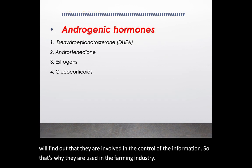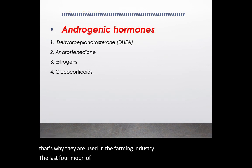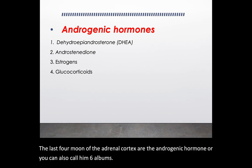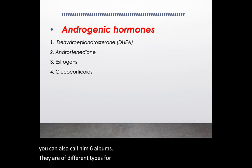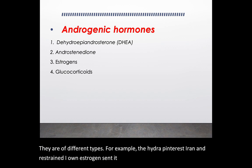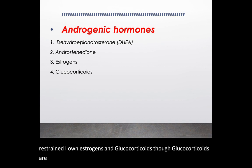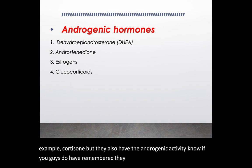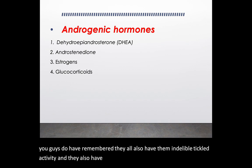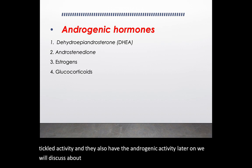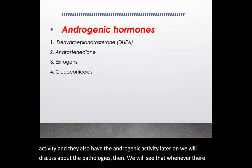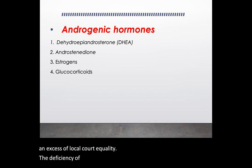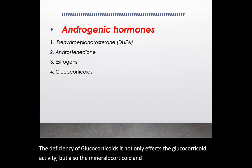The last hormones of the adrenal cortex are the androgenic hormones, also called sex hormones. They include dehydroepiandrosterone, androstenedione, estrogens, and glucocorticoids. Though glucocorticoids are broadly classified as glucocorticoids, they also have androgenic activity and mineralocorticoid activity. Later, when we discuss pathologies, we will see that excess or deficiency of glucocorticoids affects not only glucocorticoid activity but also mineralocorticoid and androgenic activity.